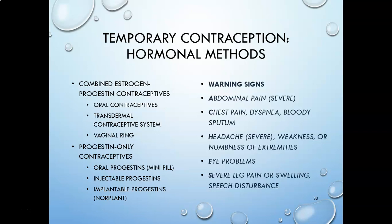Women who are breastfeeding should not take the combined contraceptive — they should take progestin-only contraceptives. The progestin-only oral pill is often called the mini pill, not because it's less effective but because it only has one hormone. Injectable progestin includes medroxy progesterone, or Depo-Provera. Implantable progestins — like Norplant or Implanon — are a rod inserted under the skin of the arm that releases progesterone. If breastfeeding women take combined estrogen-progesterone contraceptives, it can greatly decrease their milk production.